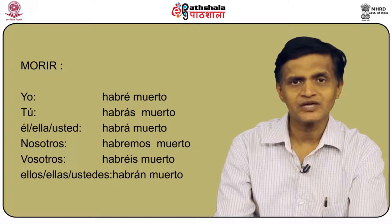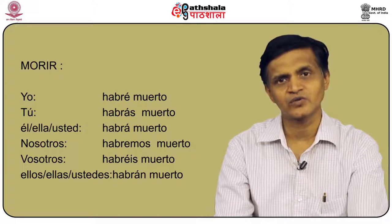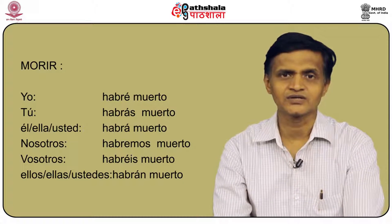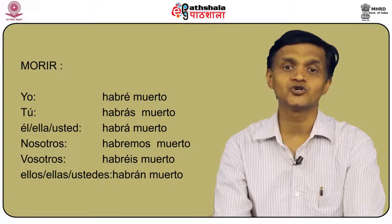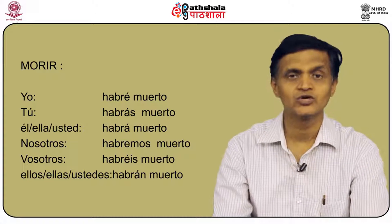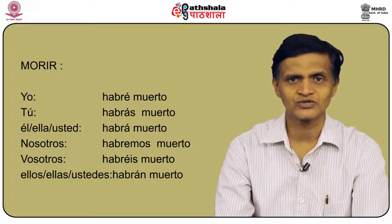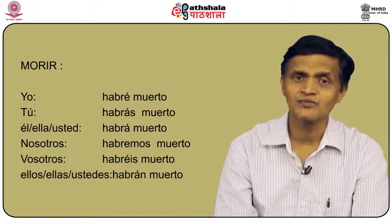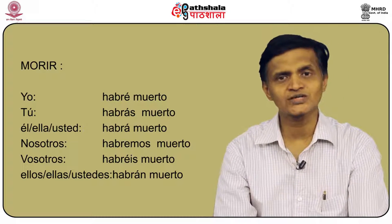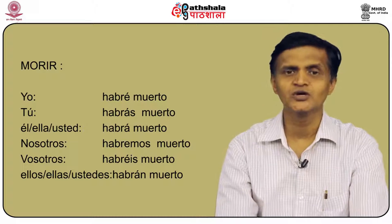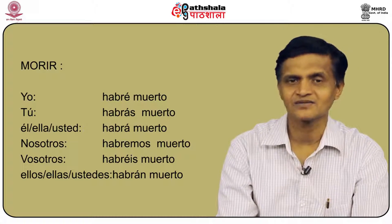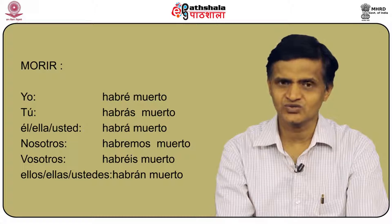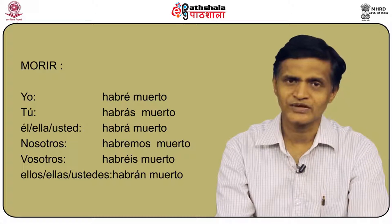The verb morir is conjugated differently as it is irregular: its past participle is muerto. So: yo habré muerto, tú habrás muerto, él/ella/usted habrá muerto, nosotros habremos muerto, vosotros habréis muerto, and ellos/ellas/ustedes habrán muerto.